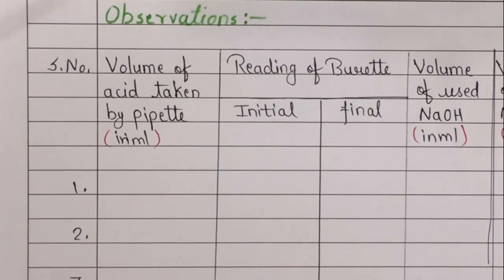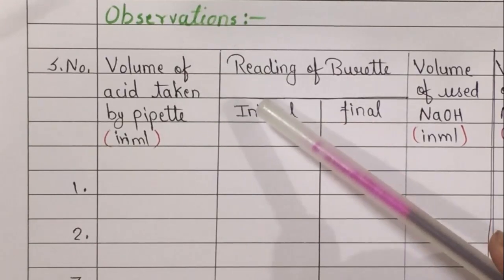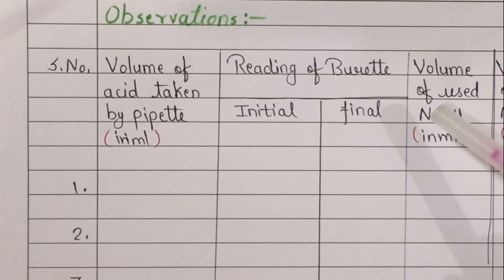During the experiment we have to record readings. Reading is recorded in the observation table. The observation table is given below. First column shows volume of acid taken by pipette in milliliter. Second column shows reading of burette, divided into two parts: initial reading and final reading. And the last column shows volume of used NaOH in milliliter.